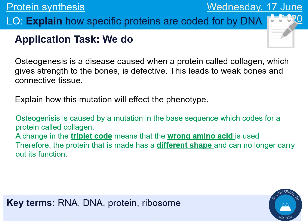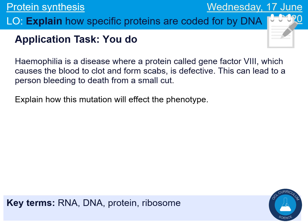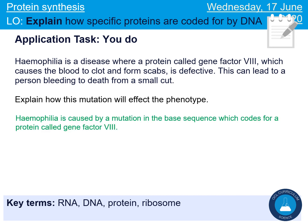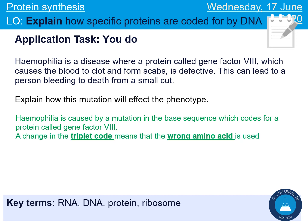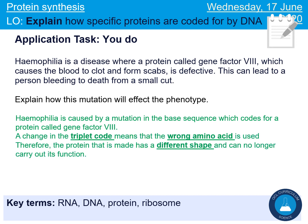Let's do one more example — pause the video and restart when you've written down your answer. For haemophilia, the first part is specific to the context: it involves a protein called clotting factor number eight. The second and third parts should be the same as before. If you feel like you need more practice with this, let your teacher know and we can give you more examples or explain it again. Thanks for listening.